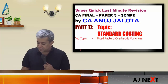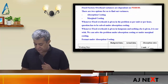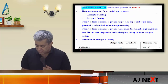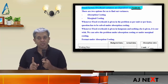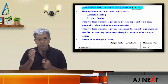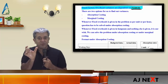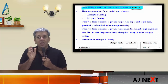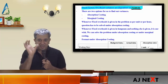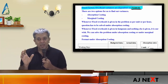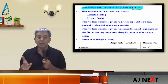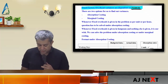Let's start with fixed factory overhead variances. First thing, as always: fixed factory overheads are dependent on the period. Whenever you compute fixed overhead variances, remember one simple thing — first think about the time frame of the question. If actual data is for one year, standard data should also be for one year. If actual data is for one month, standard data should also be for one month.